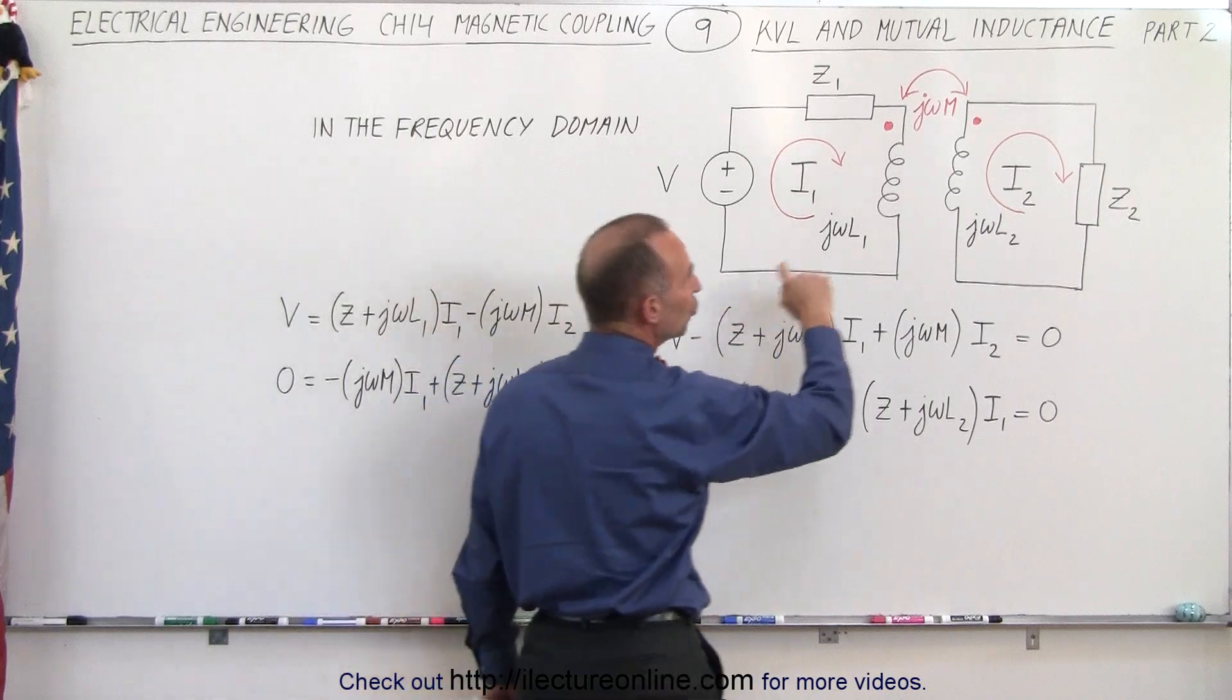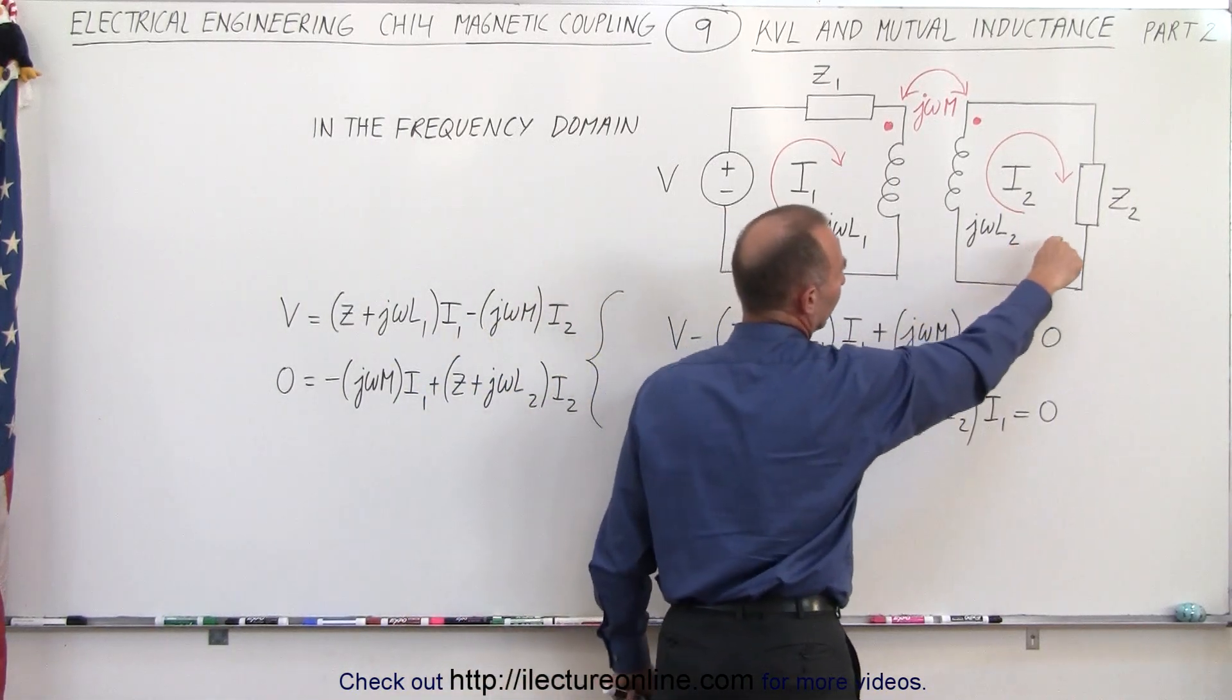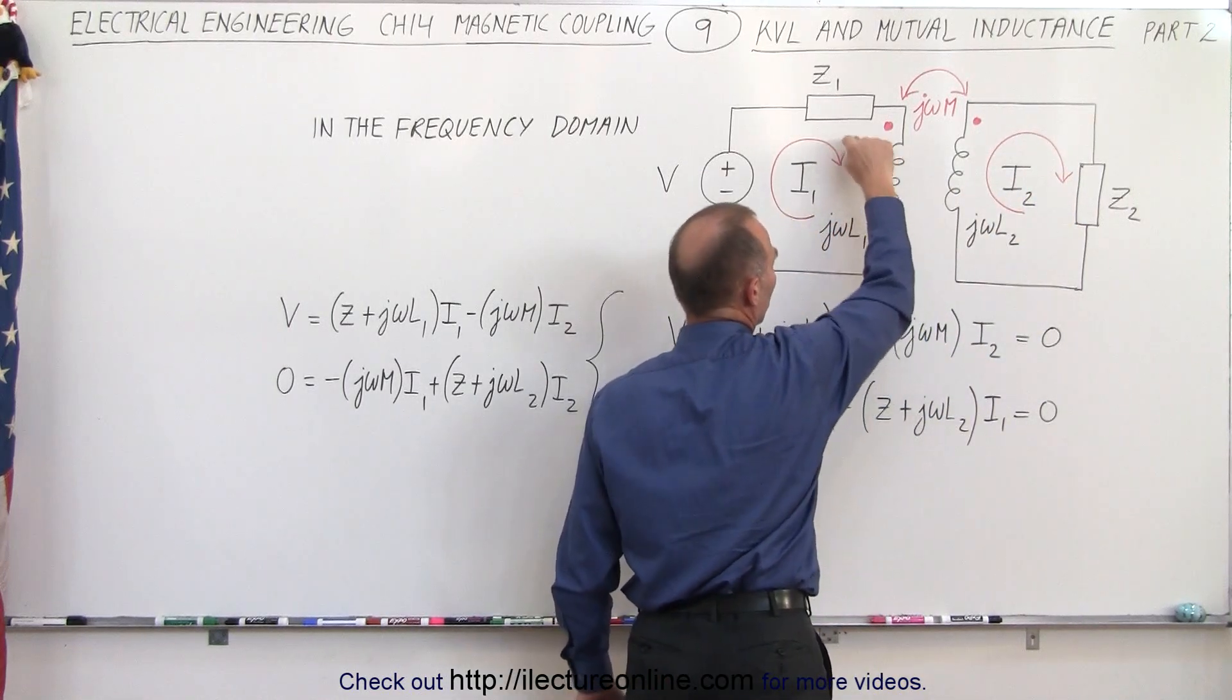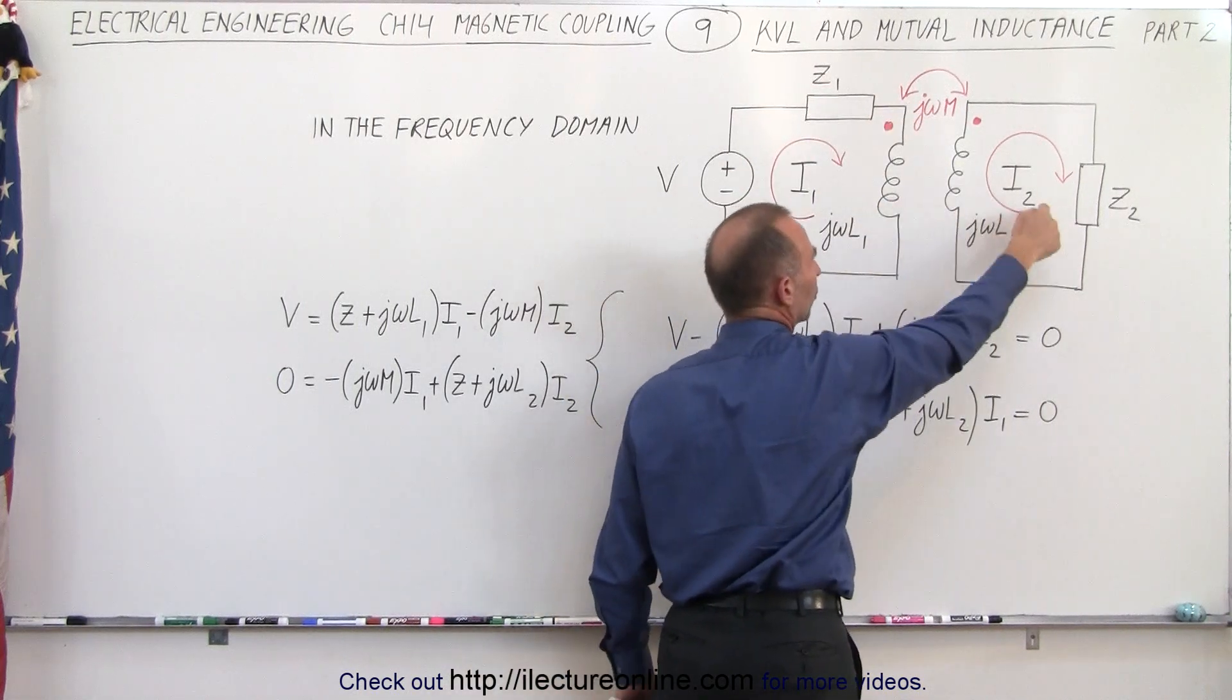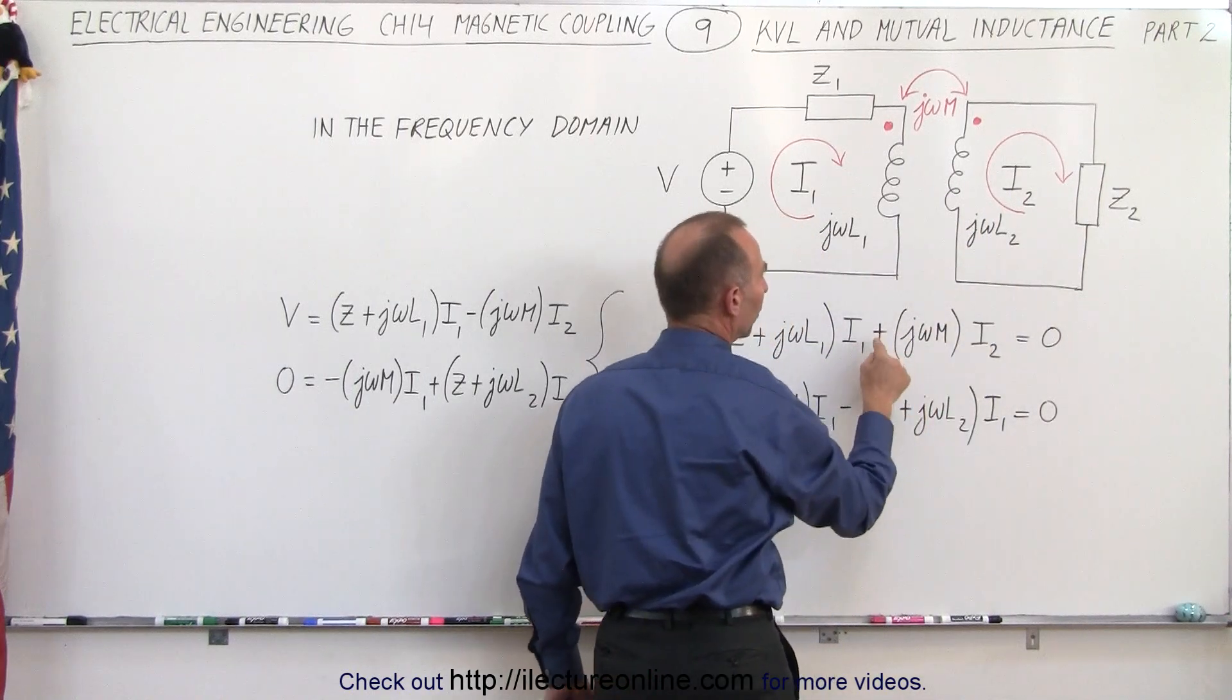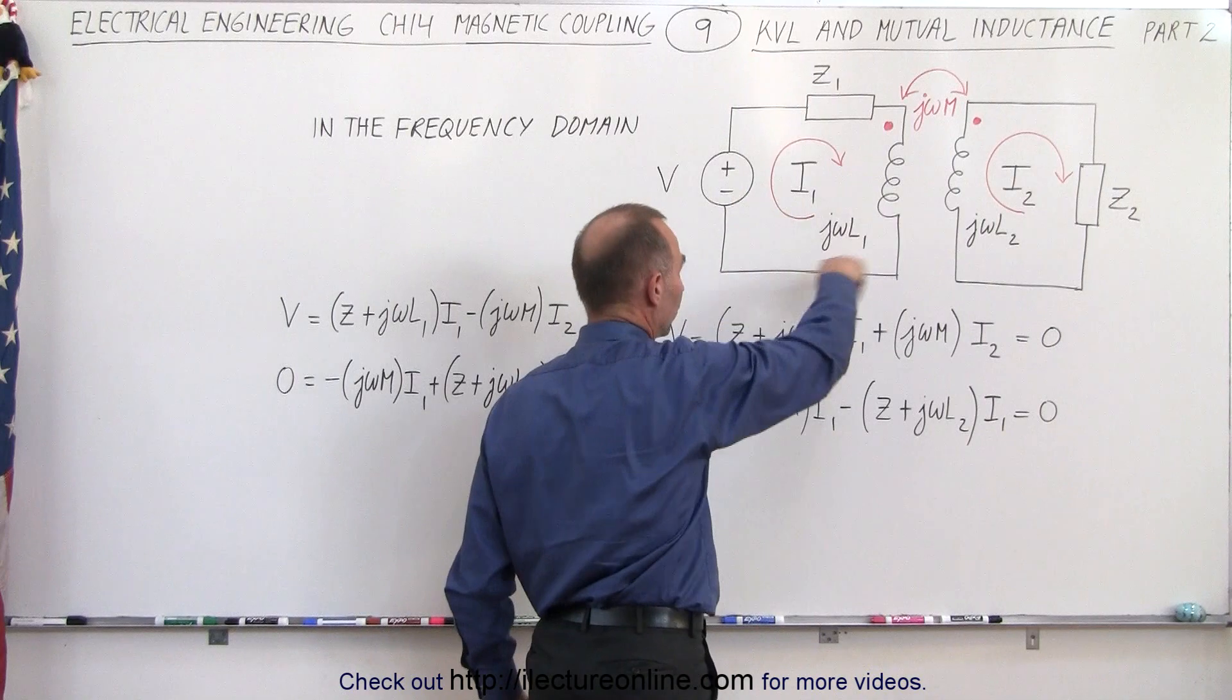And then we have mutual coupling between the two. You'll notice that the current is in the opposite direction relative to this circuit right here. So when we travel around the circuit in a clockwise direction, we go against the current of I2. Therefore, it'll be a voltage rise or a plus jωM times I2.